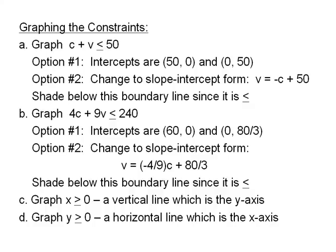The second constraint is 4C plus 9V is less than or equal to 240 and we have the same two options. By plugging in X equals 0 and Y equals 0, we can find our two intercepts. Or we can rearrange the equation to get V equals negative 4 ninths times C plus 80 thirds. So we can graph this as slope intercept form. When the line is in place, realize once again we will shade below this boundary line because the problem is less than or equal to.